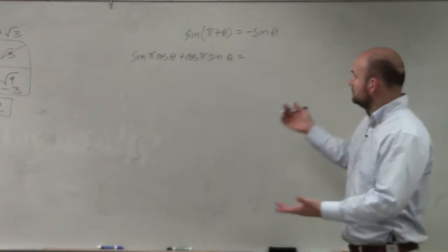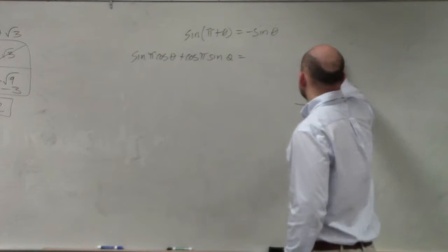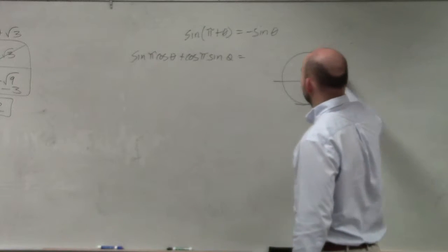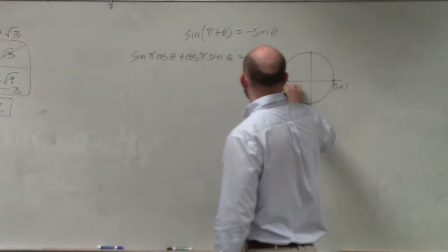Now let's evaluate. Well, using the unit circle here, that's 1, 0. And this angle pi is negative 1, 0.